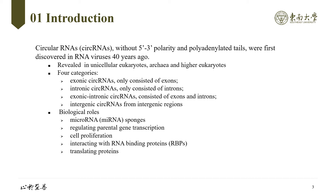Studies have suggested that circular RNAs play various biological roles, such as functioning as microRNA sponges, regulating parental gene transcription and cell proliferation, interacting with RNA binding proteins, as well as translating proteins. In this review, we summarize the recent findings on biogenesis of circular RNA forms, progress on detection methods, and highlight the challenges for further research.